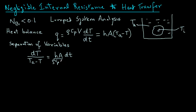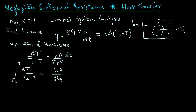Note that what we have done is separate the variables — uppercase T (temperature) on the left-hand side and lowercase t (time) on the right-hand side. Next, we will integrate this. The limits for the integral will be Ti to T — that is, the initial temperature to some temperature for the object. We have dT over (Ta minus T), and that equals hA over rho Cp V — these are all constant terms — times the integral from 0 to some time t, and then dt.